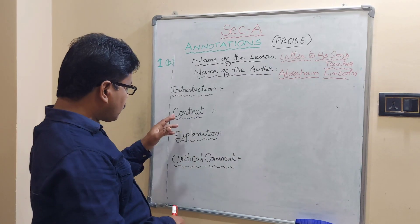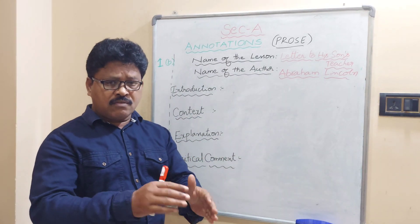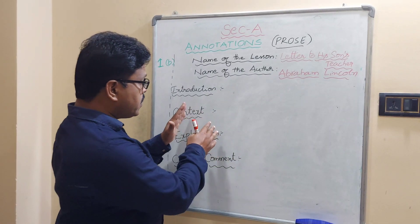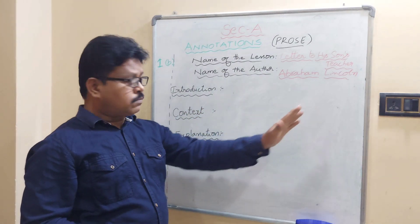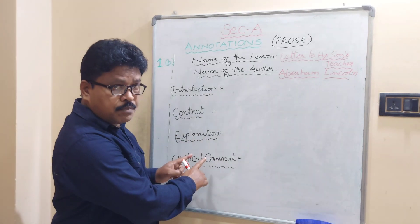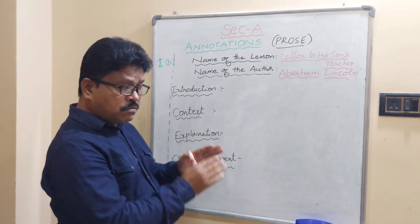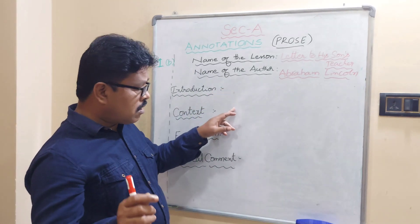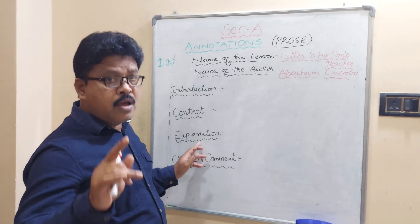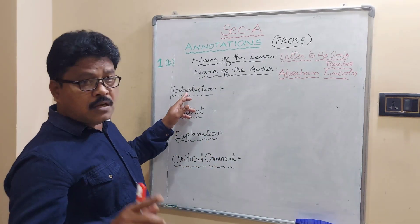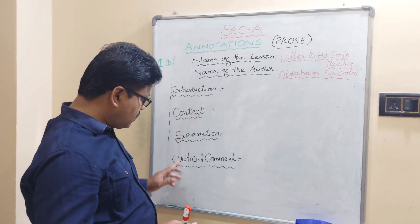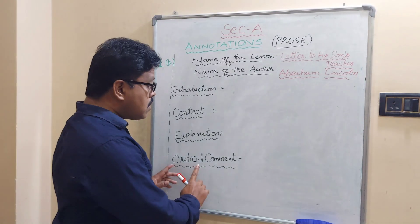In the Context paragraph, mention which book the passage is taken from, who the speaker is, and who the listener is. The most important part is the Explanation paragraph — it should be the biggest of all four paragraphs. Explanation is also called 'meaning.' Introduction is also called 'reference,' and the last paragraph, Critical Comment, is also called 'general relevance' in some books.